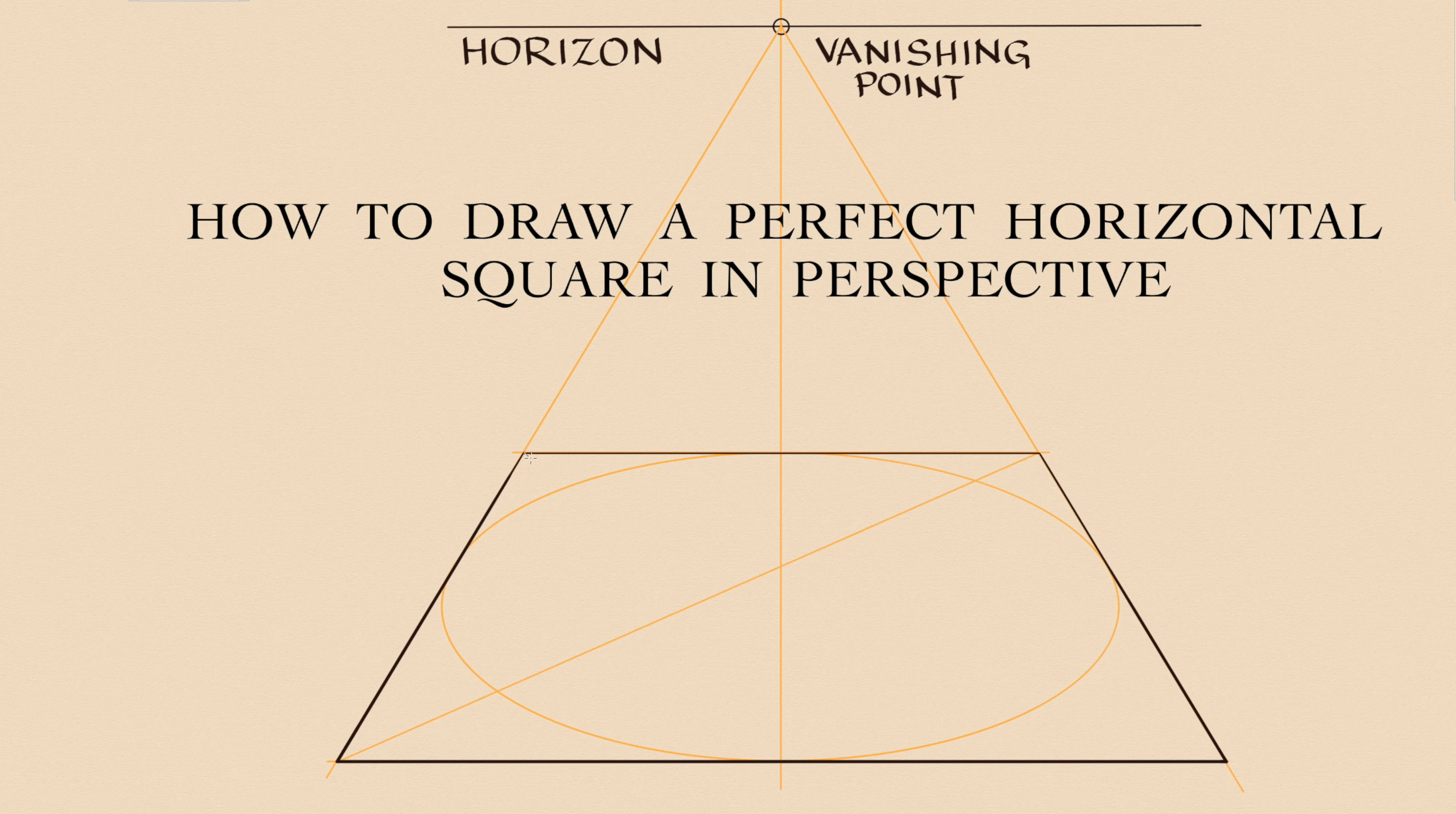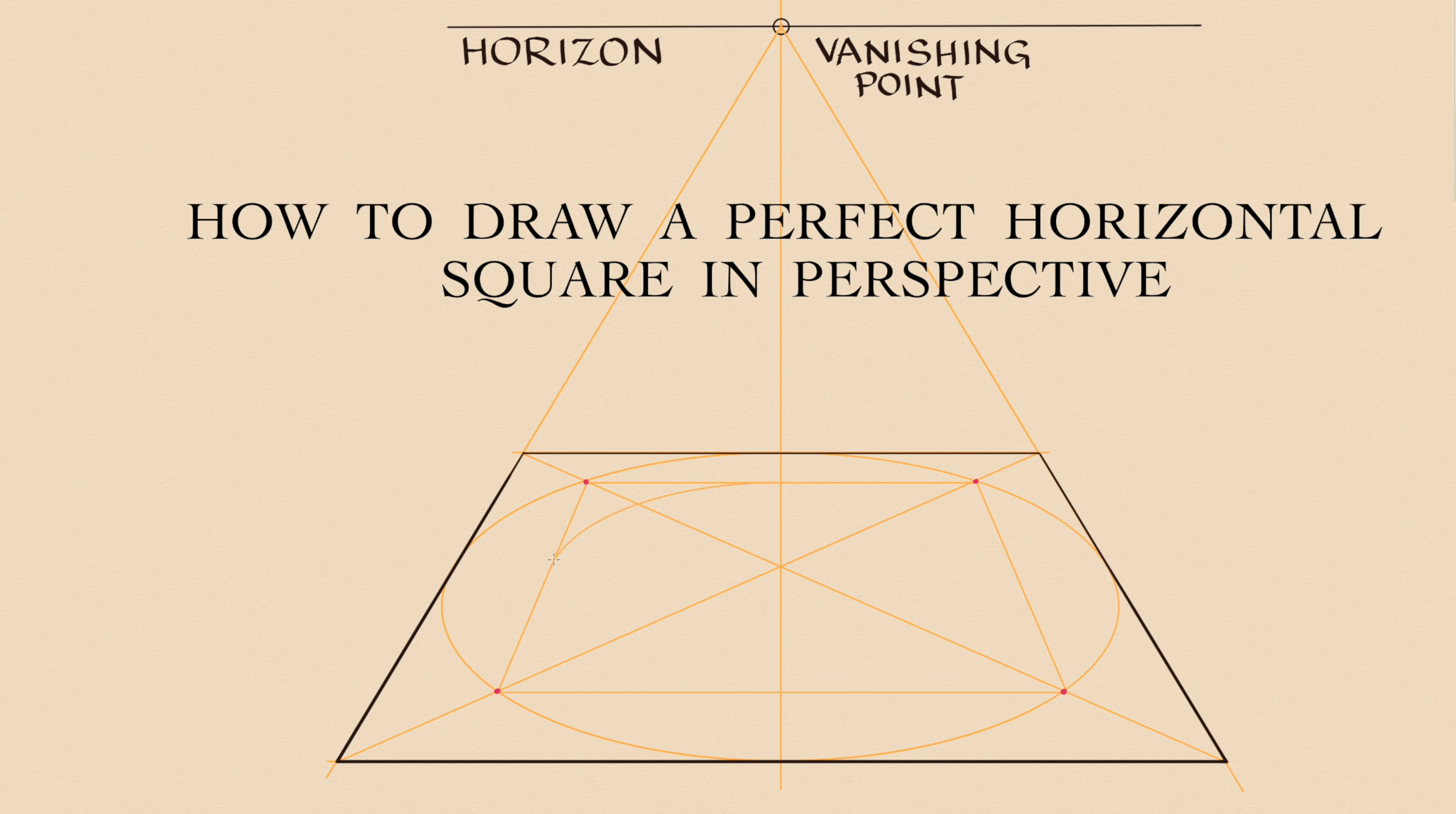Two diagonals of that square cross the ellipse in four points marked here in red. A smaller square can be built using these four points. This square is also seen in one point perspective. Another ellipse can be inscribed into that square.